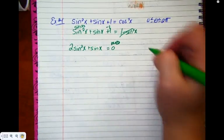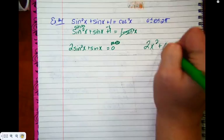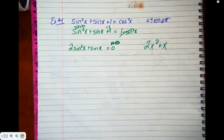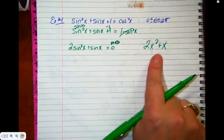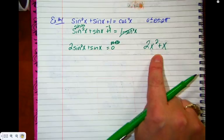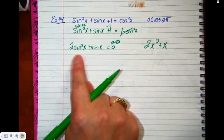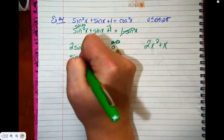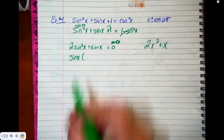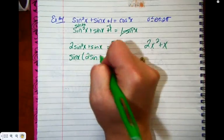So just like this guy here, common factor. Here the common factor would be? X. And you'd be left with? 2X plus 1. Good, so we're going to just apply that here. The common factor is sine X. And we're left with 2 sine X plus 1.